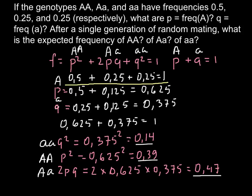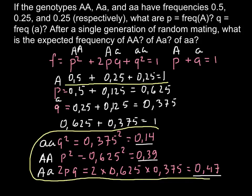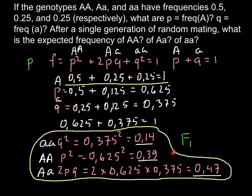This tells us the population is not in Hardy-Weinberg equilibrium, probably because there is some gene flow, non-random mating, or other reasons. So we have solved the problem and answered both questions. The parent population frequencies were 0.5, 0.25, and 0.25, and the F1 population frequencies are 0.39, 0.47, and 0.14. If you add all these numbers, you get 1, confirming our answer is correct.